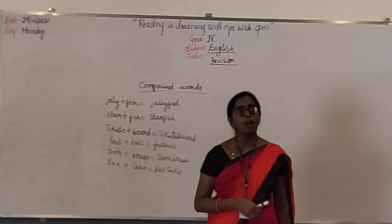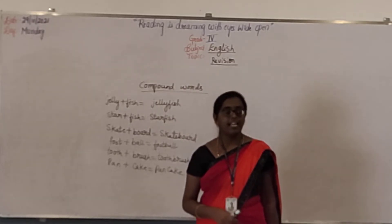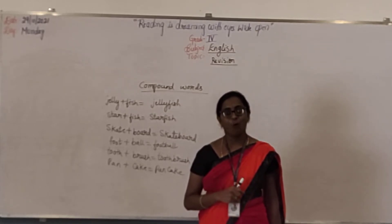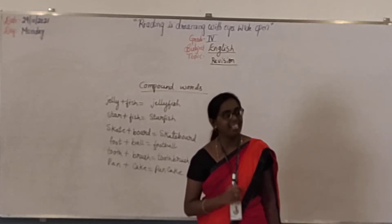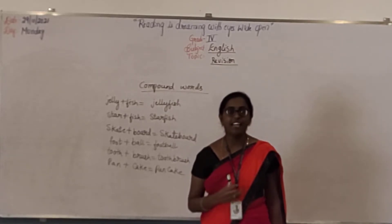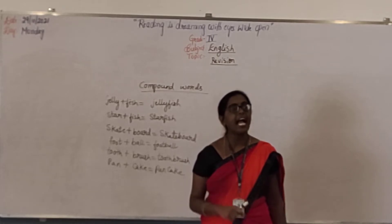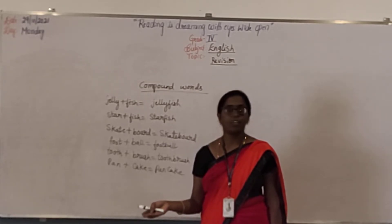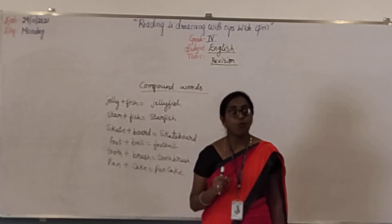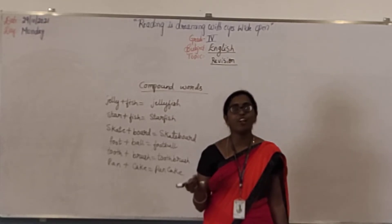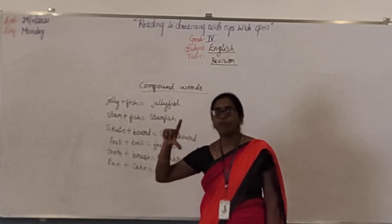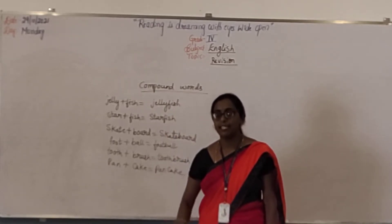Which are uncountable nouns? Stars — we cannot count stars at all. Rice, sugar, salt, sand — can we count those? No. Water, milk — liquid also we cannot count. But we can say one glass of milk, one glass of water, two glasses of water like that.